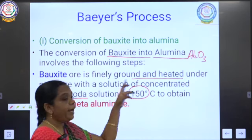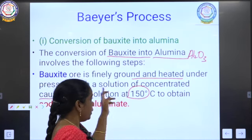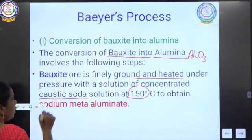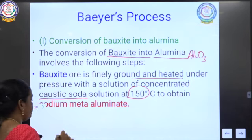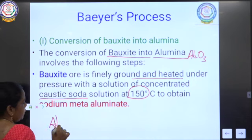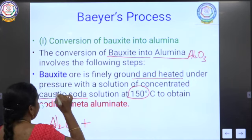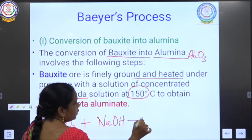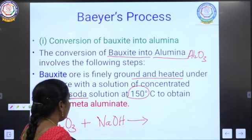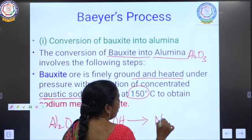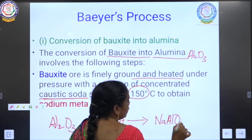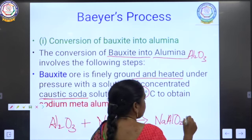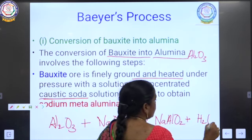The alumina reacts with sodium hydroxide under pressure at 150°C to form sodium metaaluminate. The chemical reaction is: Al₂O₃ + 2NaOH → 2NaAlO₂ + H₂O.